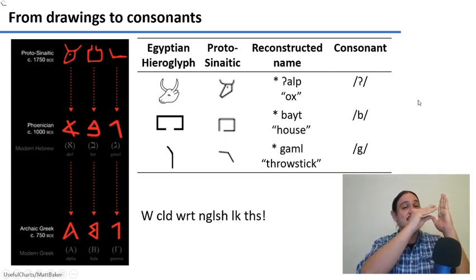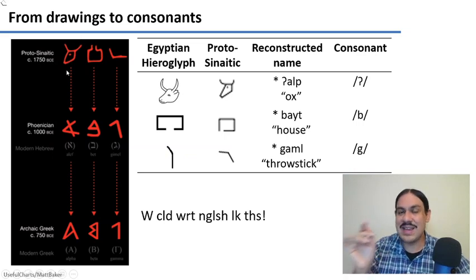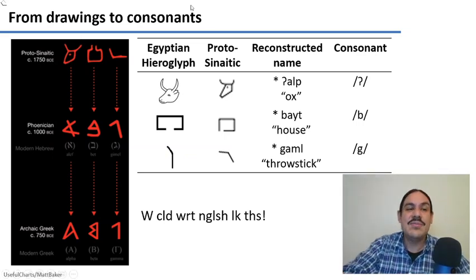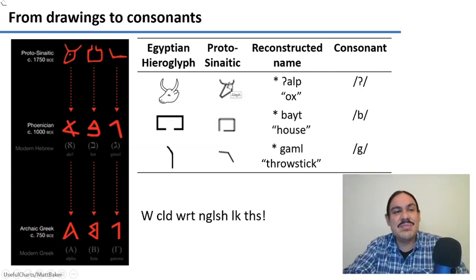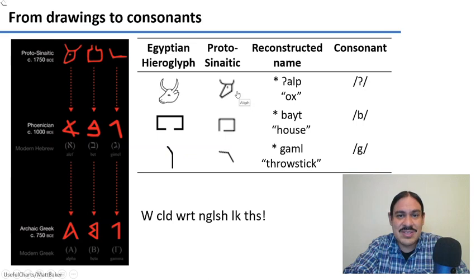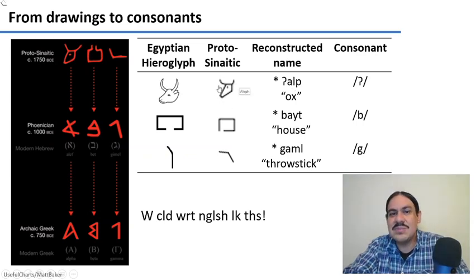We go from pictures to the rebus principle — using pictures for their sounds — and then one step further: reinterpreting symbols as representing just the first sound of the word. For example, Egyptian hieroglyphs of an ox, a house, and a stick were reinterpreted in the Proto-Sinaitic system from about four thousand years ago as just the first sound of each word. In Sinaitic these would have been pronounced 'alp,' 'bite,' and 'gamel,' but the signs came to stand only for the first consonant: the glottal stop, the 'b' in 'bite,' and the 'g' in 'gamel.'